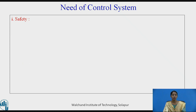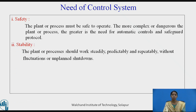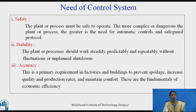Let us see the need of control system. Safety: the plant or process must be safe to operate. The more complex or dangerous the plant or process, the greater is the need for automatic control and safeguard protocol. Stability: the plant or process should work steadily, predictably, and repeatably without fluctuations or unplanned shutdowns. Accuracy: this is the primary requirement in factories and buildings to prevent spoilage, increase quality and production rates, and to maintain comfort. These three factors play an important role in establishing the need for control systems.